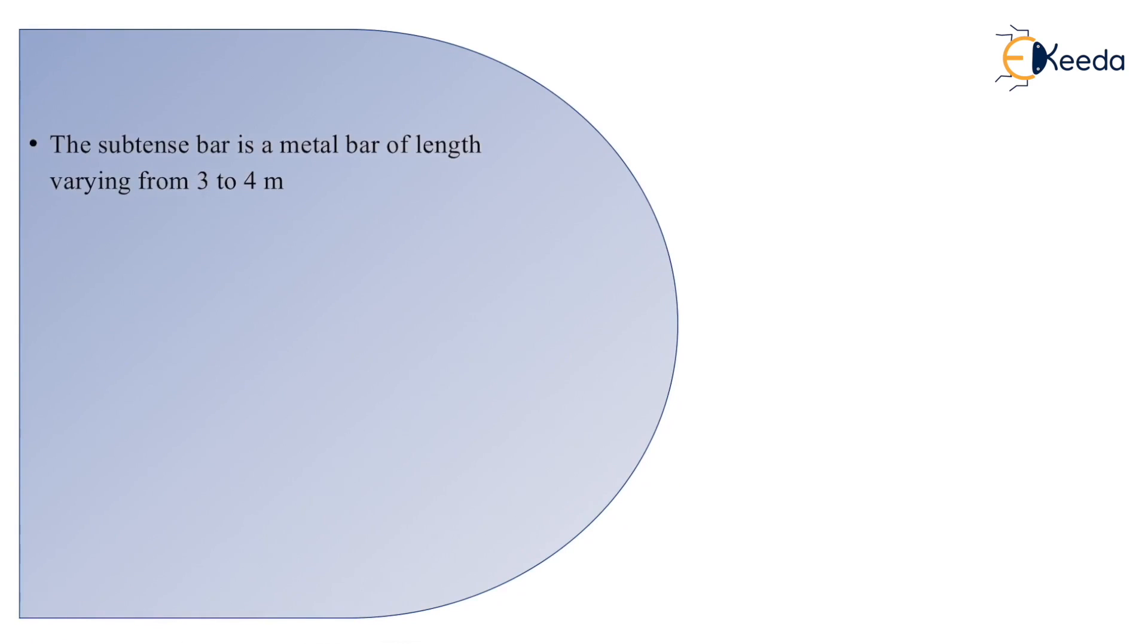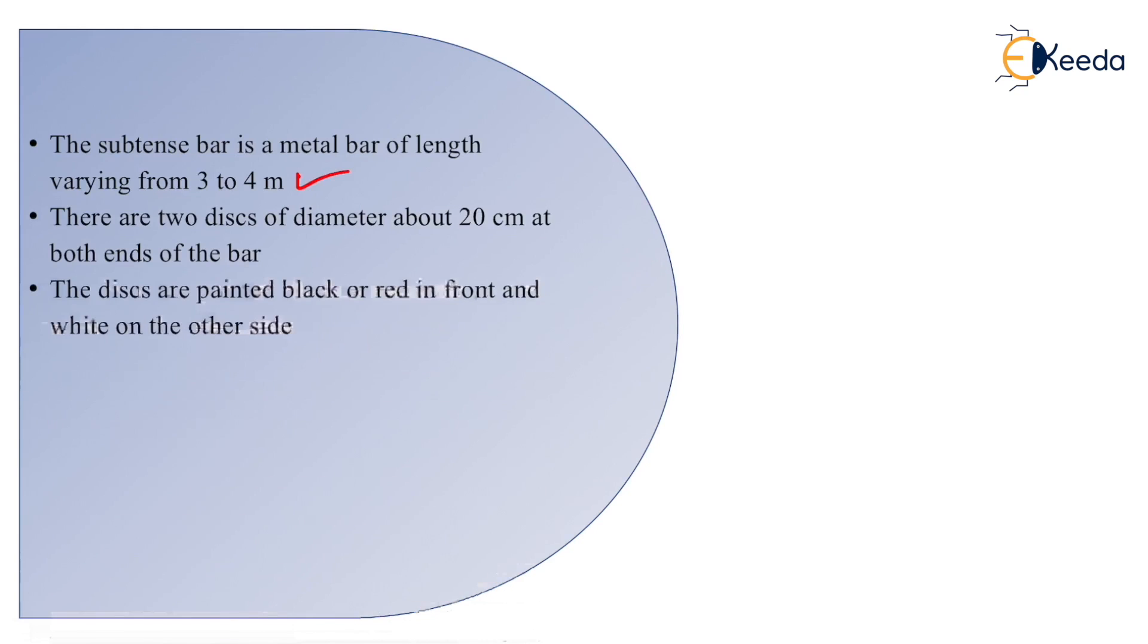The subtense bar is a metal bar of length varying from 3 to 4 meters. There are two discs of diameter about 20 cm at both the ends of the bar as we are seen in figure. These are painted black or red in front and white on the other side.